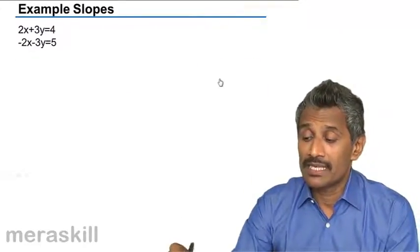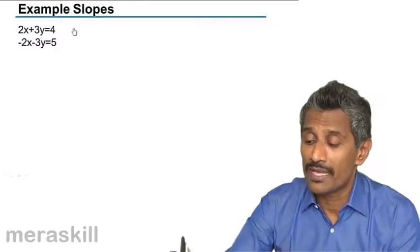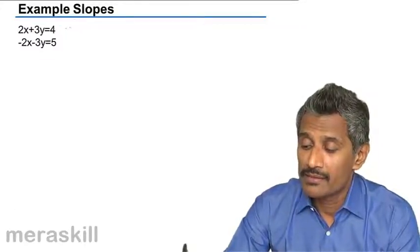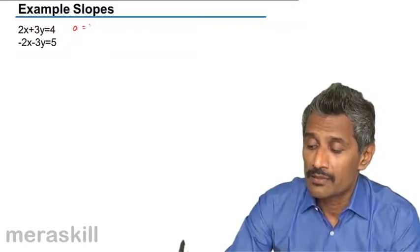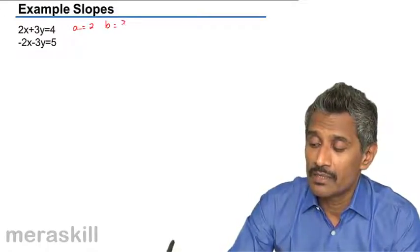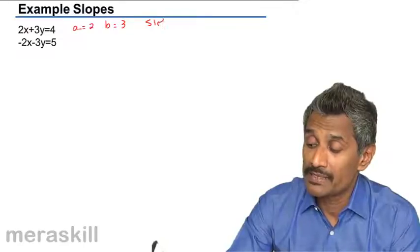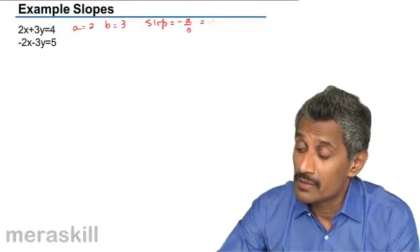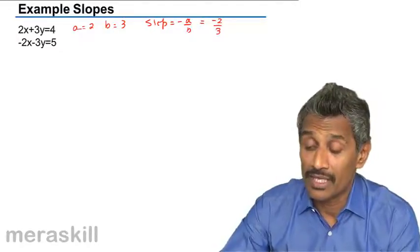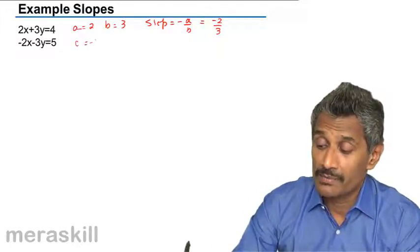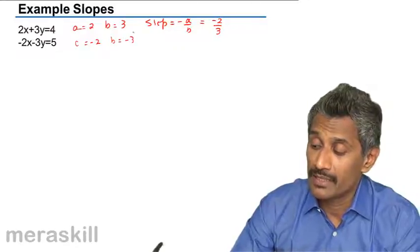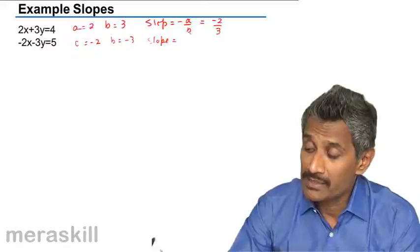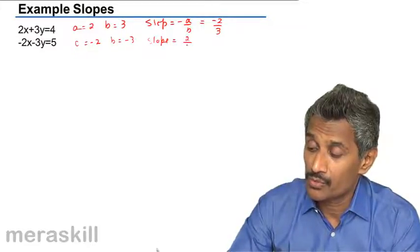Say for example, let's take this case example of slopes. So in this case a is 2, b is 3. So slope is minus a by b, which is minus 2 by 3. Here a is minus 2, b is minus 3. Slope is minus of minus 2 by 3, that is 2 by 3.